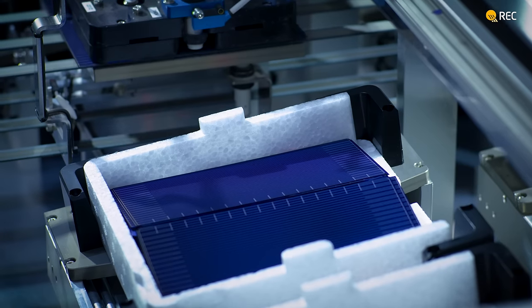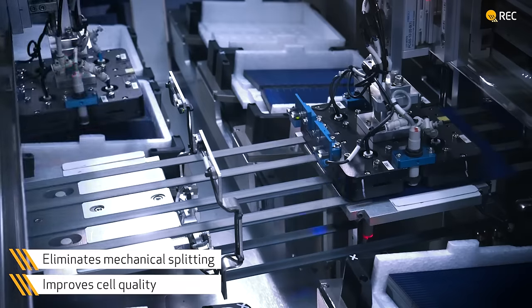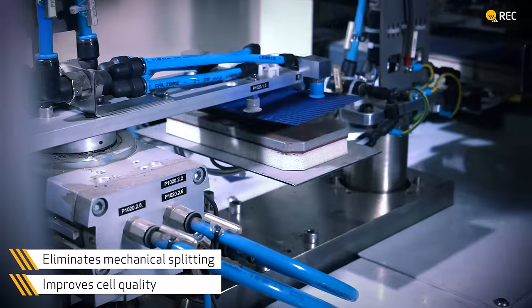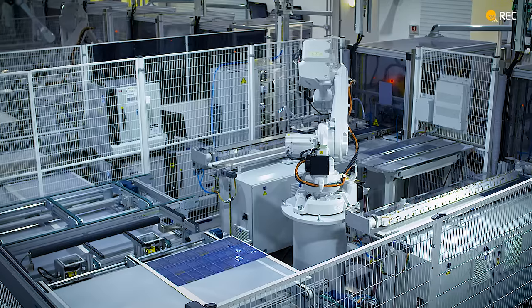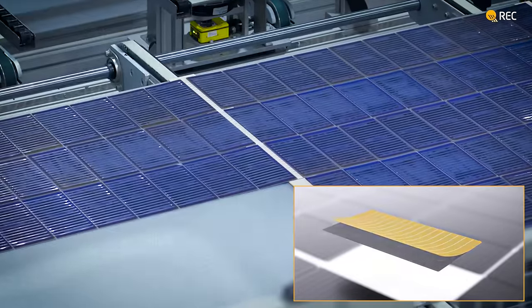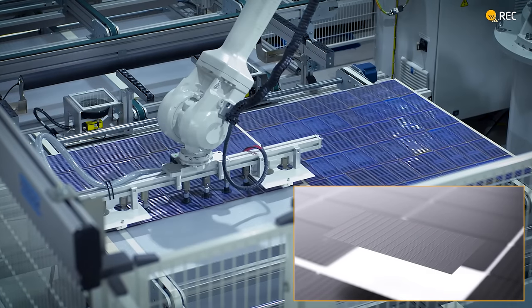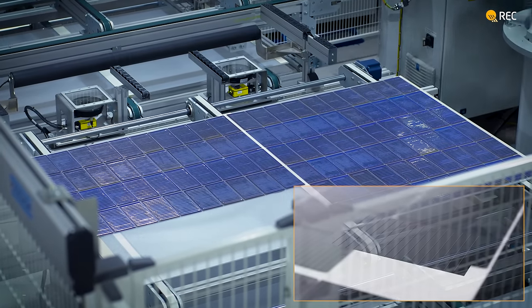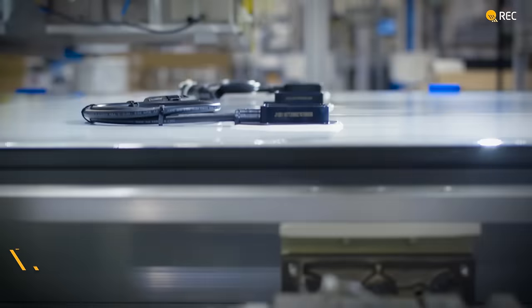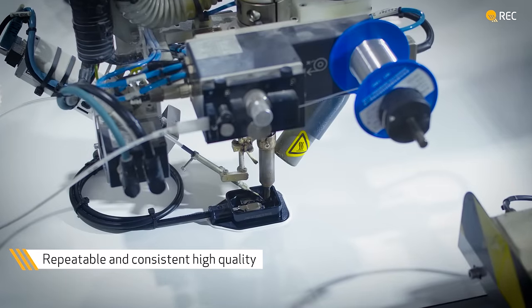REC's dedication to manufacturing excellence continues with the cells in the REC Alpha. These are connected by the use of an advanced low-temperature interconnection technology where very thin wires are bonded to the cell using a solderless process. This innovative solution increases the number of contact points to the cell, reduces thermal stress, increases power, and provides extra protection for more durability.